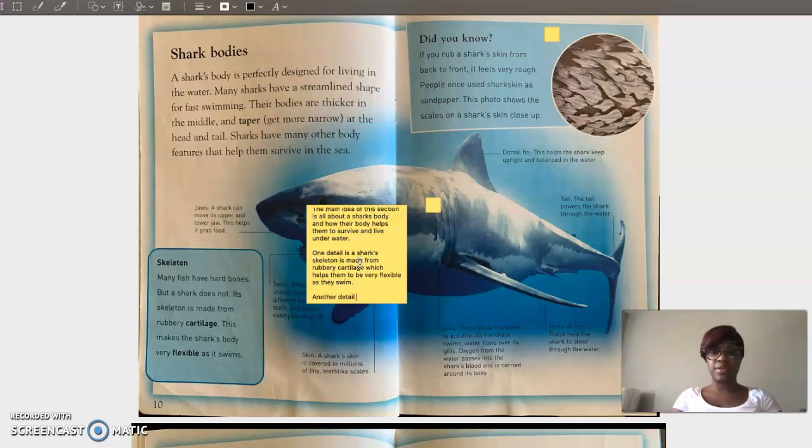Another detail is, let's see if we can take some information from here. Here, yes, their body, a shark's body is thicker in the middle and more narrow at the head and tail, which what? That helps them to survive in the sea and where else do sharks live? And oceans. Excellent.